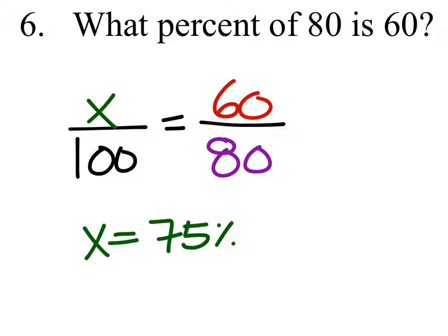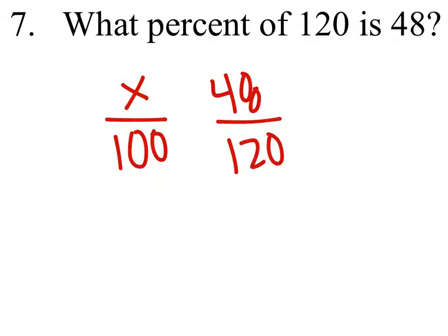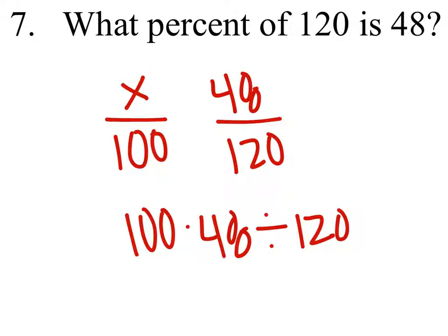Fishing method sets up like this. You do your little fishy thing where you do 100 here, X here, and then over here you do 48, and then 120. And you do 100 times 48 divided by 120, which gives you 40, and that's 40%.